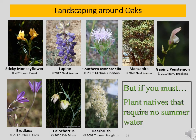If you absolutely must landscape around your oaks, we strongly suggest the use of native plants that do not require summer water. We have shown only the common names of these plants here. You can find out more about them by looking them up in the Calphotos database. Choose the plant section and use the common plant names we have given you.